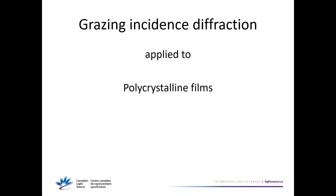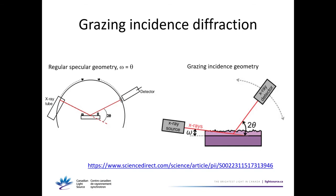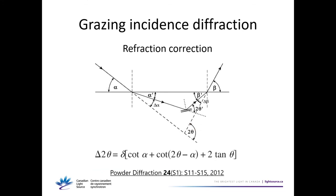In the regular specular geometry, omega — the incidence angle — equals theta. For grazing incidence diffraction applied to polycrystalline films, the incidence angle is kept grazing while the detector moves to scan two-theta. Grazing incidence requires several corrections: absorption correction, Lorentz polarization factor correction, atomic scattering factor, and particularly a refraction correction that becomes more important the more grazing the incidence angle is.